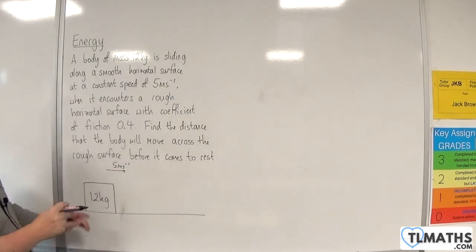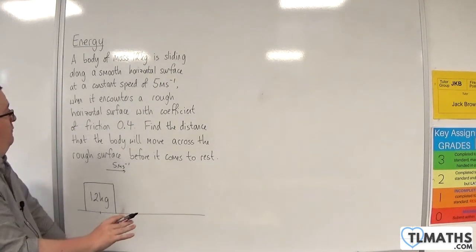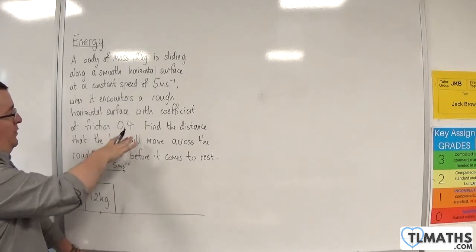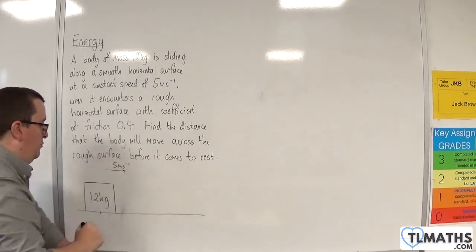And it encounters a rough horizontal surface, so now the surface is rough. It's got a coefficient of friction 0.4, we'll deal with that in a moment. Find the distance that the body will move across the rough surface before it comes to rest.